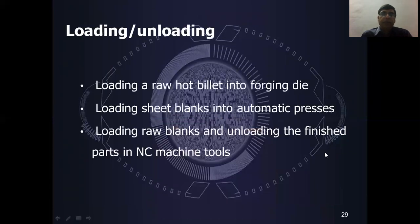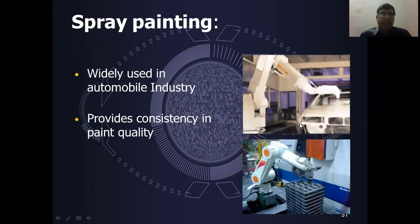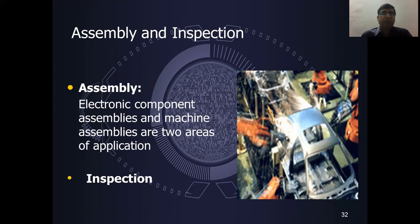Robot applications include: loading and unloading — such as forging dies, blanks, or finished parts for NC machines; welding operations used in the automobile industry for arc welding and aerospace construction; spray painting in the automobile industry for consistency in paint quality; and assembly and inspection — including electronic component assembly and machine assemblies.